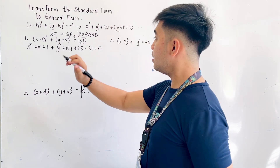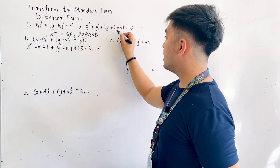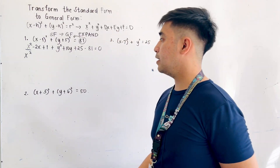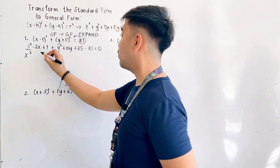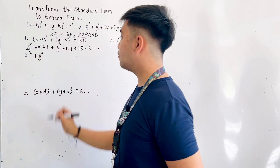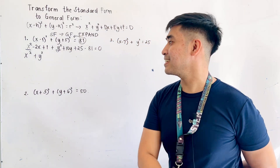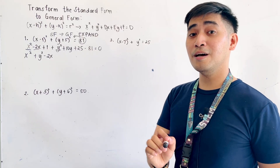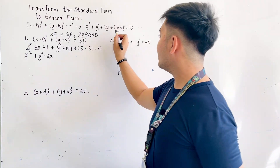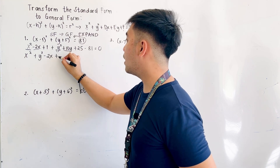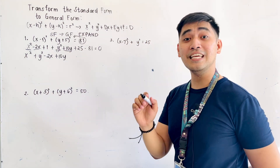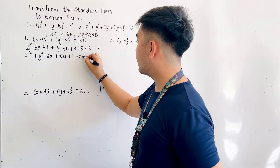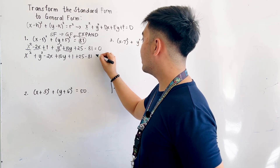Now we assemble the general form x squared plus y squared plus dx plus ey plus f equals zero. We have x squared, plus y squared, then the dx term is minus 2x, then the ey term is plus 10y, and all the constants are plus one plus twenty-five minus eighty-one, which equals zero.